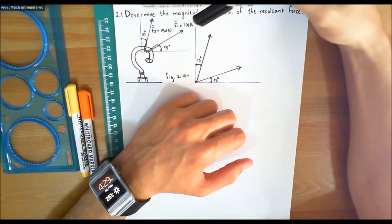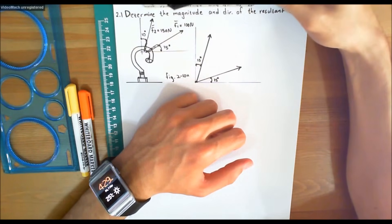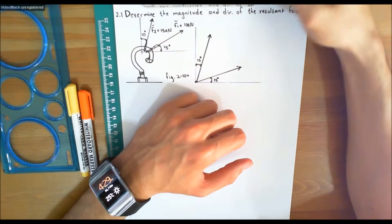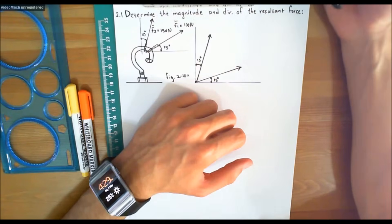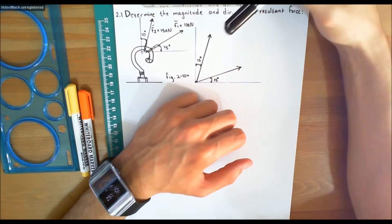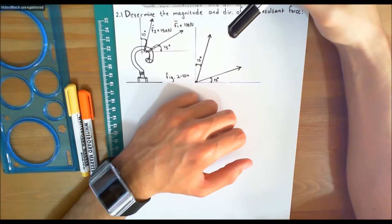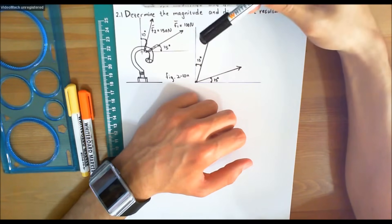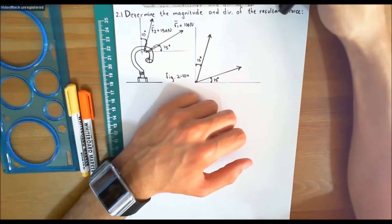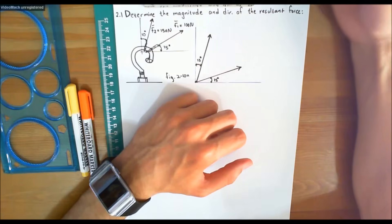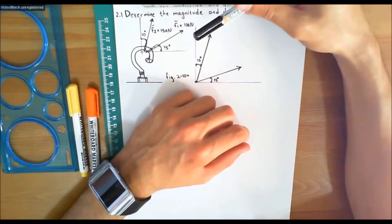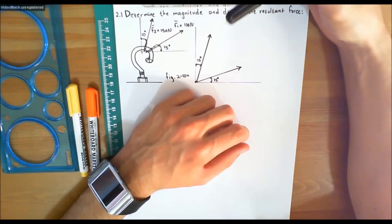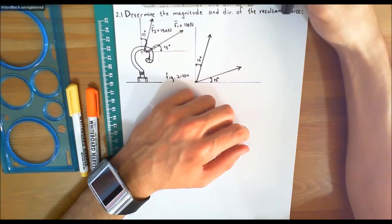In this video, we are going to solve example problem 2.1: determine the magnitude and direction of the resultant force. As you can recall from the previous video, the two common problems encountered in statics include finding the resultant force, as indicated in this question, and resolving a known force into components, which would be the opposite of this.